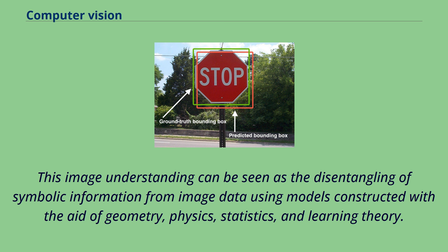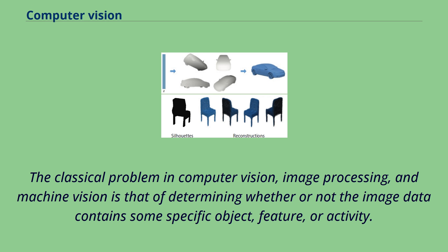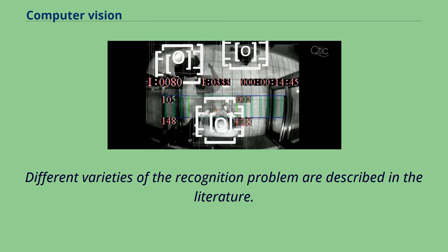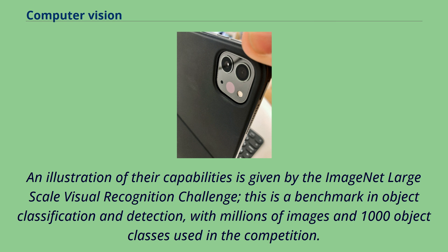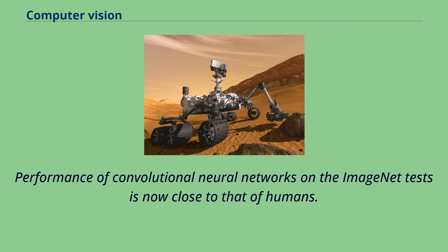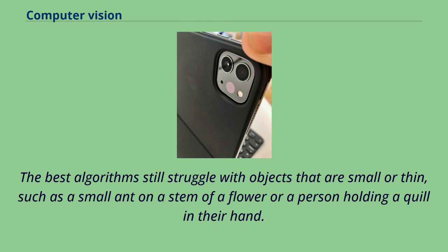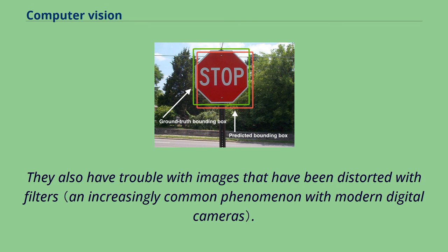The classical problem in computer vision, image processing, and machine vision is that of determining whether or not the image data contains some specific object, feature, or activity. Currently, the best algorithms for such tasks are based on convolutional neural networks. An illustration of their capabilities is given by the ImageNet Large Scale Visual Recognition Challenge — a benchmark in object classification and detection with millions of images and 1,000 object classes. Performance of convolutional neural networks on the ImageNet tests is now close to that of humans. The best algorithms still struggle with objects that are small or thin, such as a small ant on a stem of a flower or a person holding a quill, and have trouble with images distorted with filters.